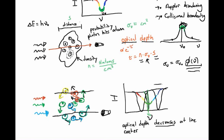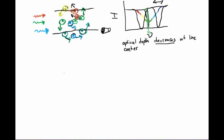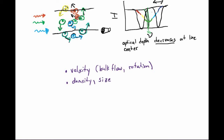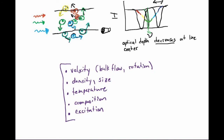The width of these lines can also tell you something about the temperature. As you can see, there are a lot of things we can learn from absorption and emission lines: the velocity of atoms in the clouds (from bulk flow or rotation), the density and possibly the size of the cloud, the temperature, what atoms are present (composition) depending on where the absorption lines are, and the excitation state of the cloud. There's a whole wealth of interesting information embedded in spectra measured relative to a background continuum source, and that's why astronomers use spectral lines quite frequently to study our surrounding universe.